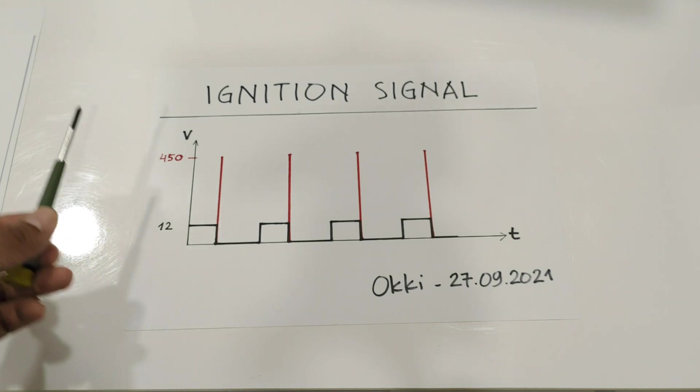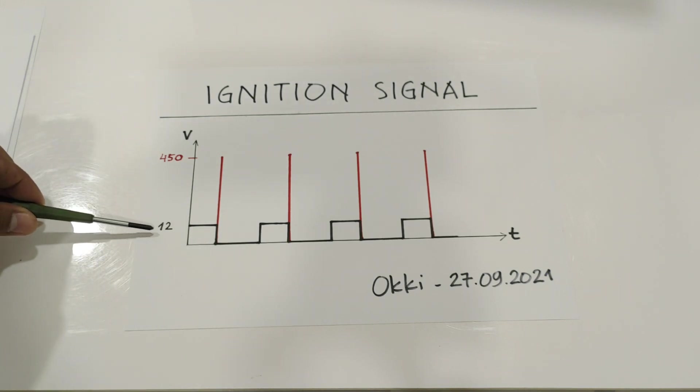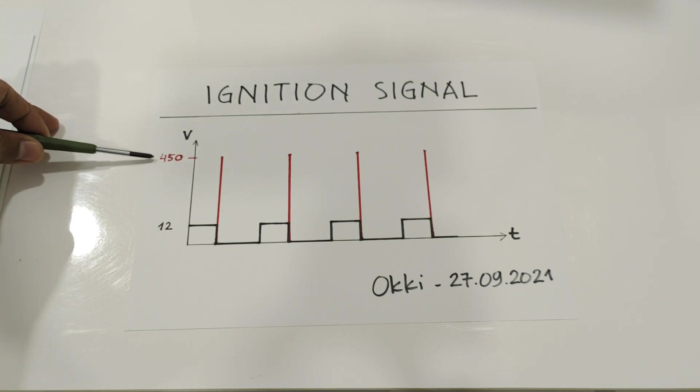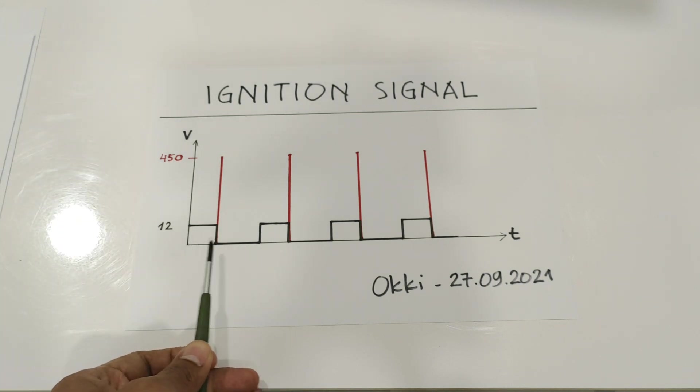So again, this is the typical 12V ignition system and this is the CDI system. Here we can see that the typical ignition system needs a longer time to charge the ignition coil.